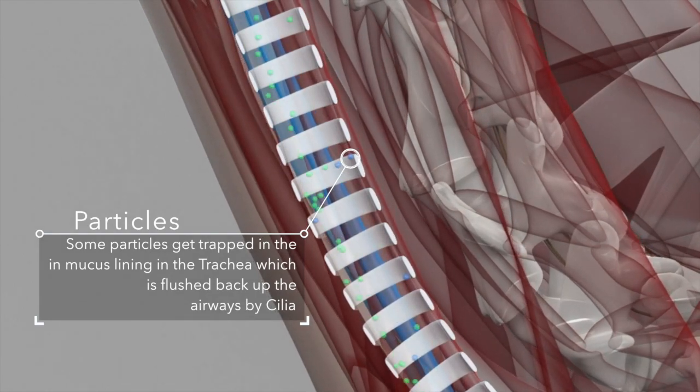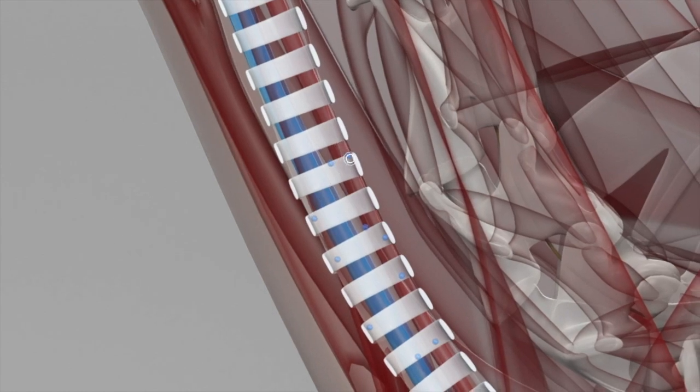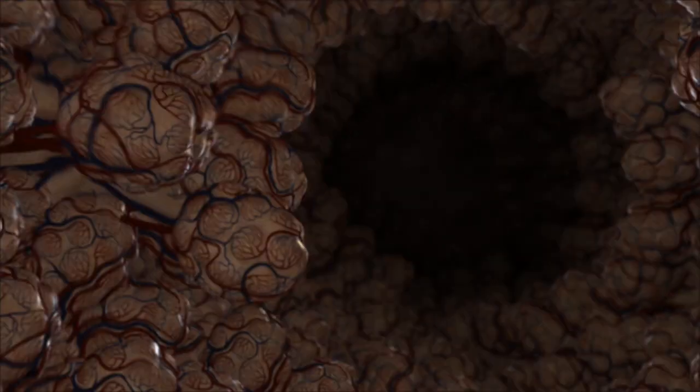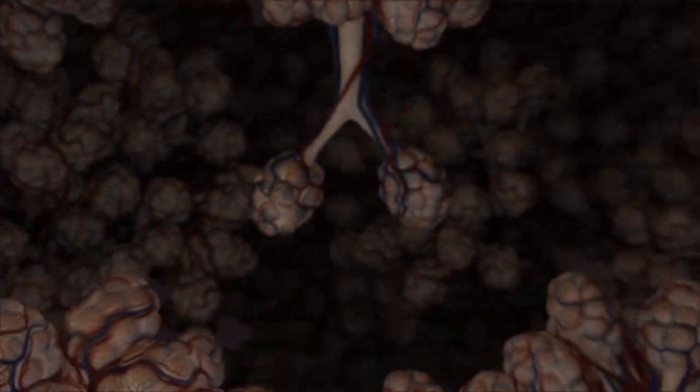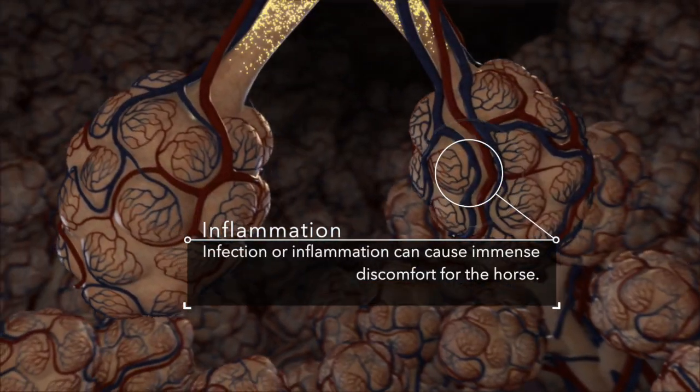Some particles get trapped by cilia in the trachea and flushed out by mucus, but others are not flushed out and can cause inflammation. Some particles reach deeper into the lungs and into the bronchi and bronchioles. Some can reach the alveolar sacs and cause inflammation there.